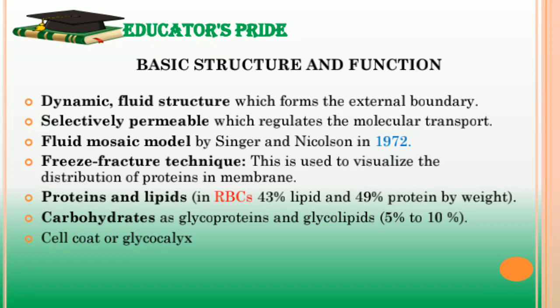Carbohydrates are also present in plasma membranes, but in a very small ratio — up to 5–10% of membrane mass. Carbohydrates are bound either to proteins or to lipids as glycoproteins and glycolipids, and they are abundant in the plasma membrane of eukaryotic cells. The term cell coat or glycocalyx is used to describe the carbohydrate coating on the cell surface.